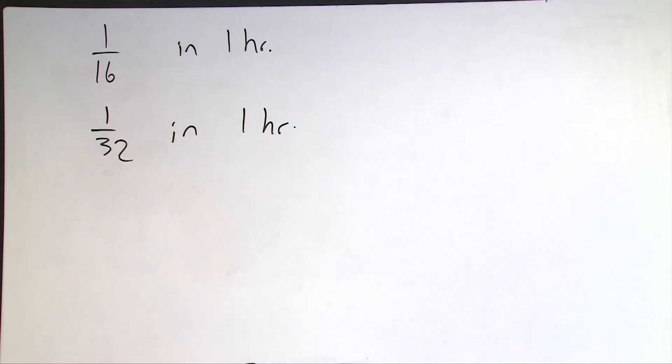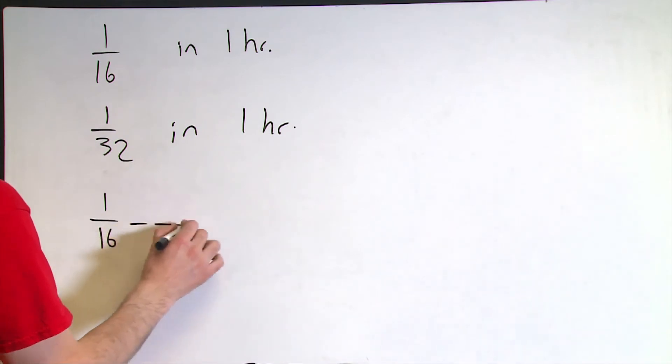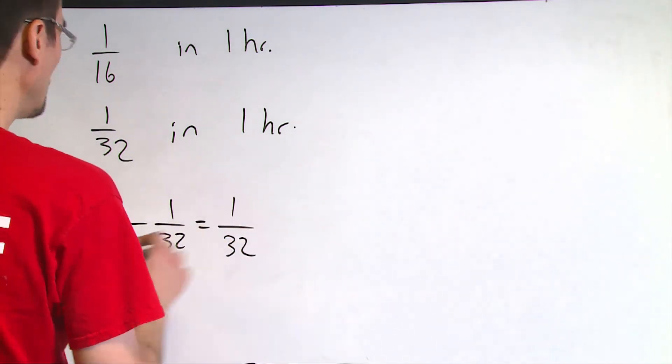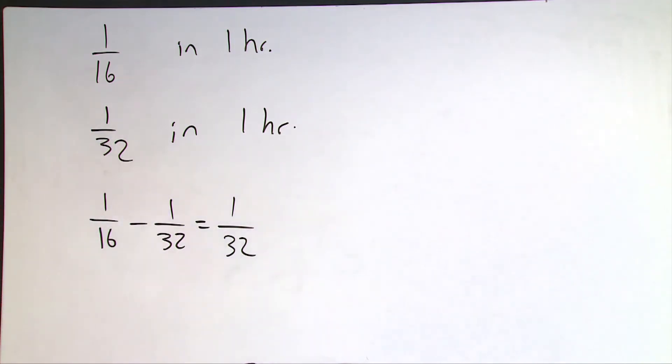With both valves open, the pool will fill. It will fill because 1 over 16 is bigger than 1 over 32. The pool will fill at the rate of 1 over 16 minus 1 over 32, which is equal to 1 over 32 of the pool in one hour.